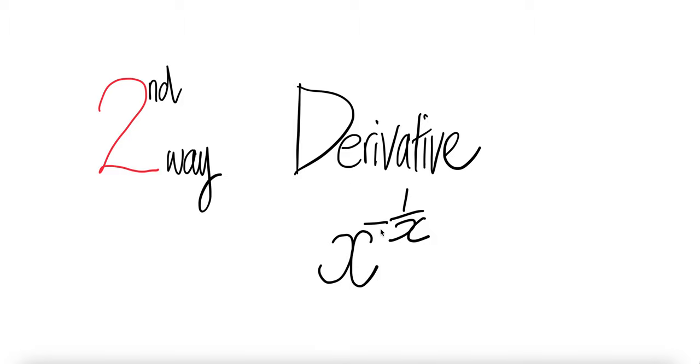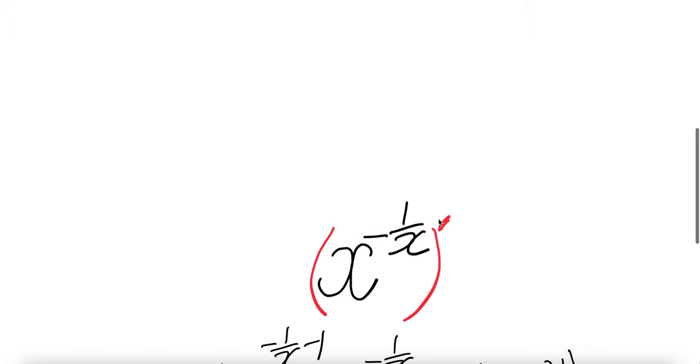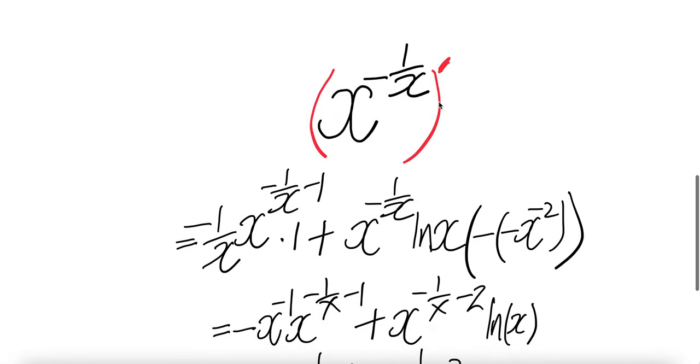We want to get the derivative of x to the power negative 1 over x. To get a derivative of this,